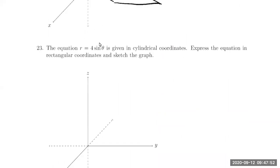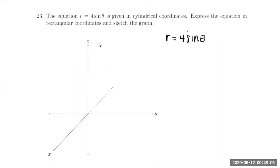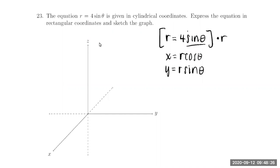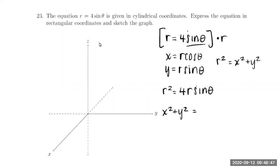Now let's look at another example. The equation r = 4 sine theta is given in cylindrical coordinates, and we want to express it in rectangular and sketch the graph. We have x = r cosine theta and y = r sine theta. I see a sine theta on this side but I'm missing an r, so I'll force an r in by multiplying the entire equation by r. That gives r² = 4r sine theta. Now r² equals x² + y², so substituting on the left: x² + y² = 4y.